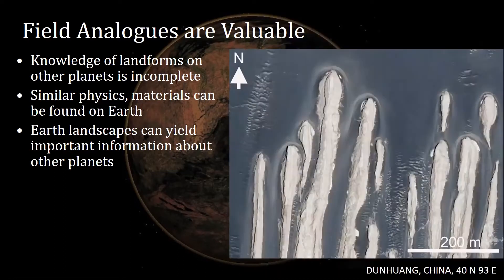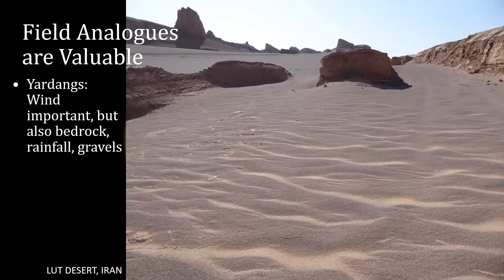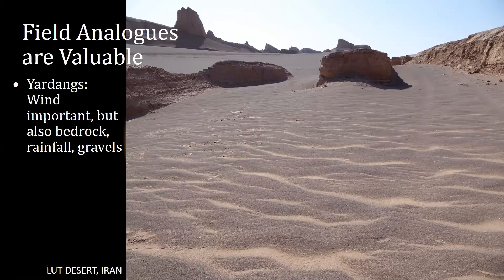We go out to the analogs on Earth — here are some in China — and first we can look at them from overhead at much better resolution than either place. The grays in the background are gravels, and there are some gravel ripples in between the yardangs. What we found in our field studies is that not only wind is important for yardangs, but also the bedrock qualities themselves, and they form in just a small range of types of bedrock that we can then use to translate to our understanding of what's going on on Mars and Titan.